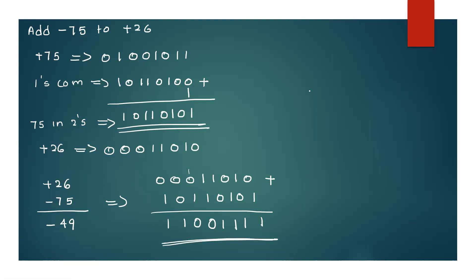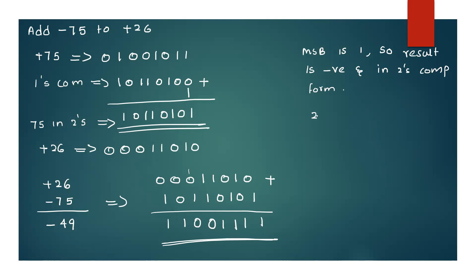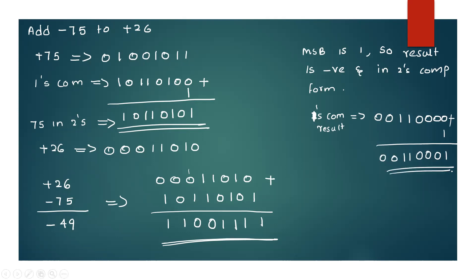The MSB is 1, so the result is negative and in 2's complement form. To find the magnitude, take the 2's complement of the result. The 1's complement of the result is 00110000, then add 1 to get 00110001, which equals 49. So the result is minus 49.